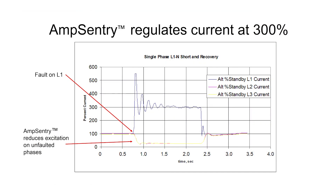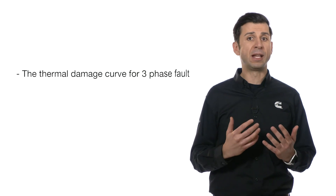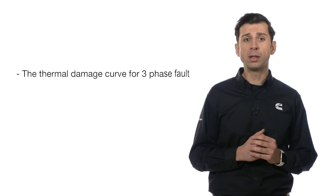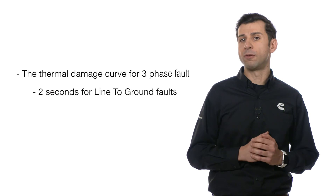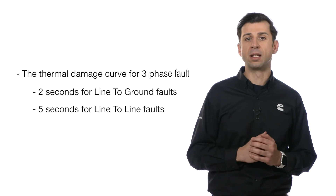If current exceeds 300% of rated, Amp Sentry decreases excitation to regulate current at 300% until the fault is cleared by a downstream breaker, or the generator set is shut down based on the thermal damage curve — two seconds for three-phase faults, two seconds for line-to-ground faults, and five seconds for line-to-line faults.